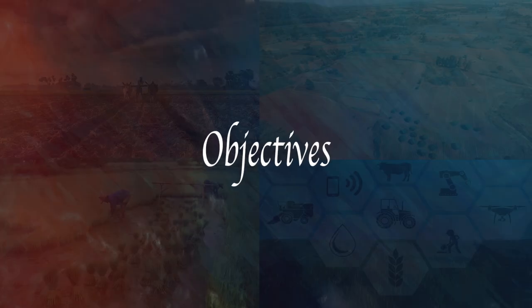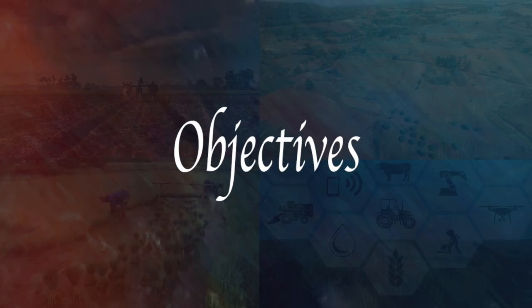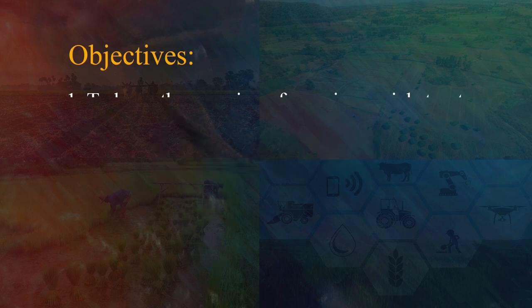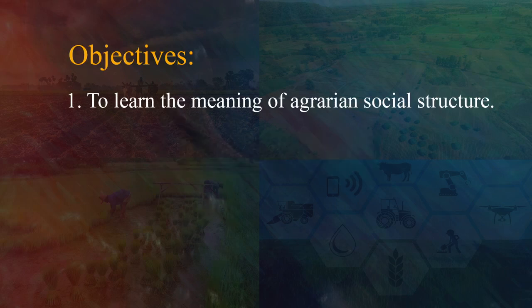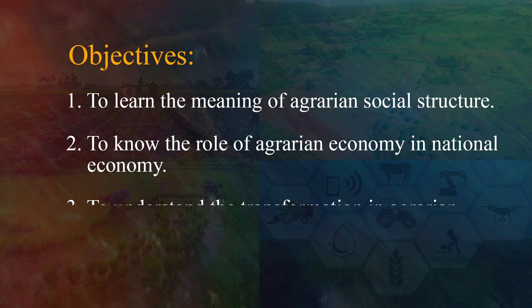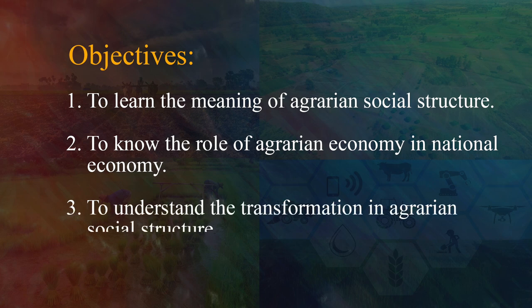Now let us start with the objectives. First, to learn the meaning of agrarian social structure. Second, to know the role of agrarian economy in national economy. Third, to understand the transformation in agrarian social structure.